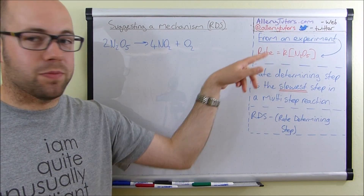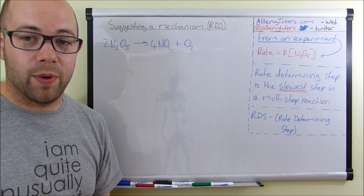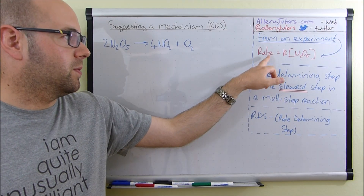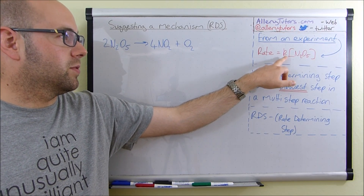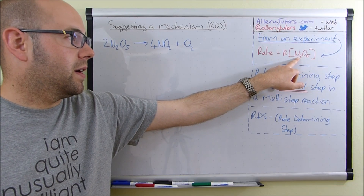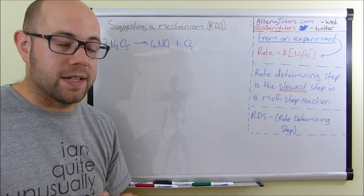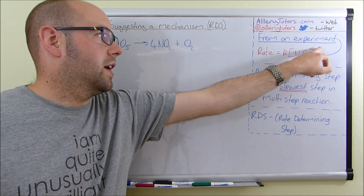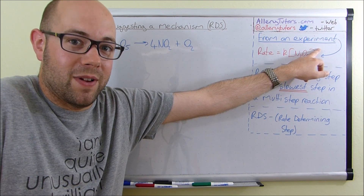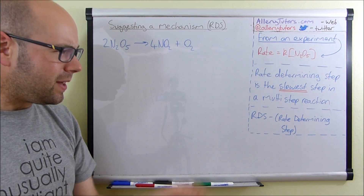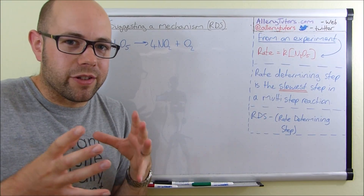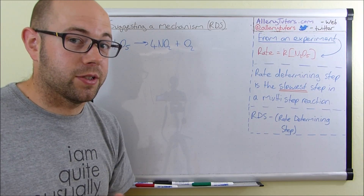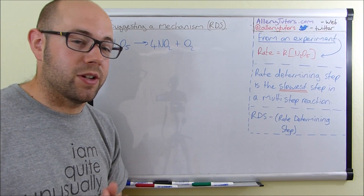We've got a rate expression, and the rate expression basically tells us which reagents in a reaction have an effect on rate and by how much. For example, this one is: rate = k × [N₂O₅], and this has a first order effect — there's effectively just a one as the exponent. The rate determining step, remember, is the slowest step in a multi-step reaction, and we're going to identify it when we finish this as well.